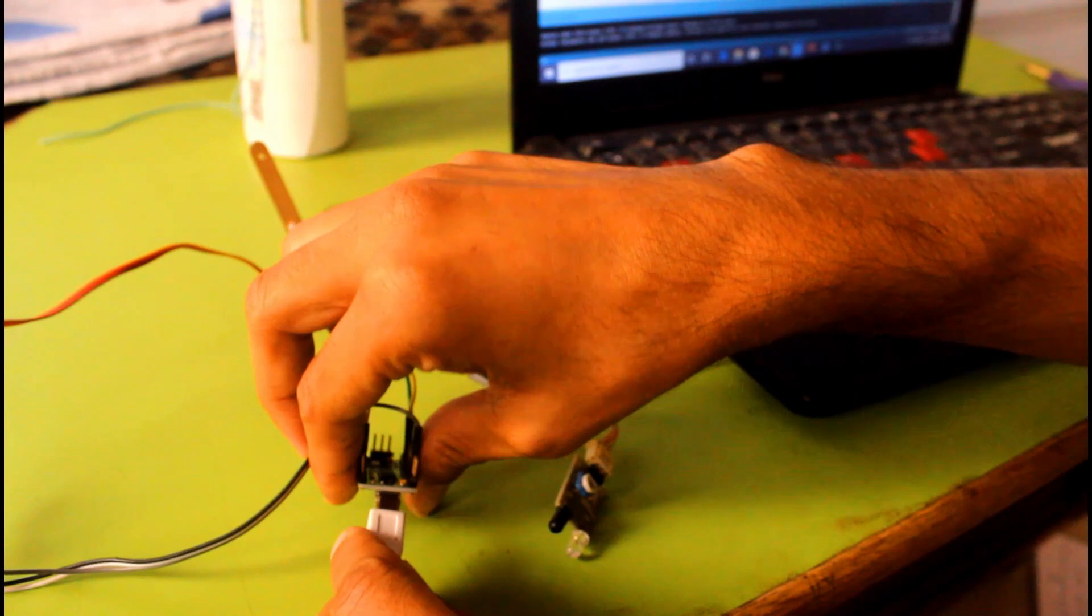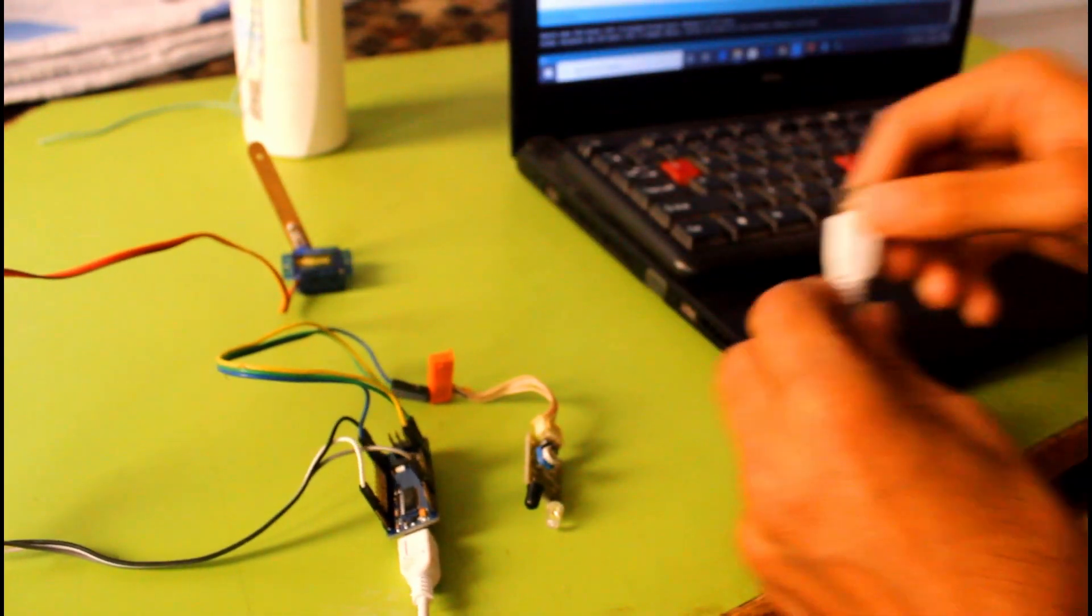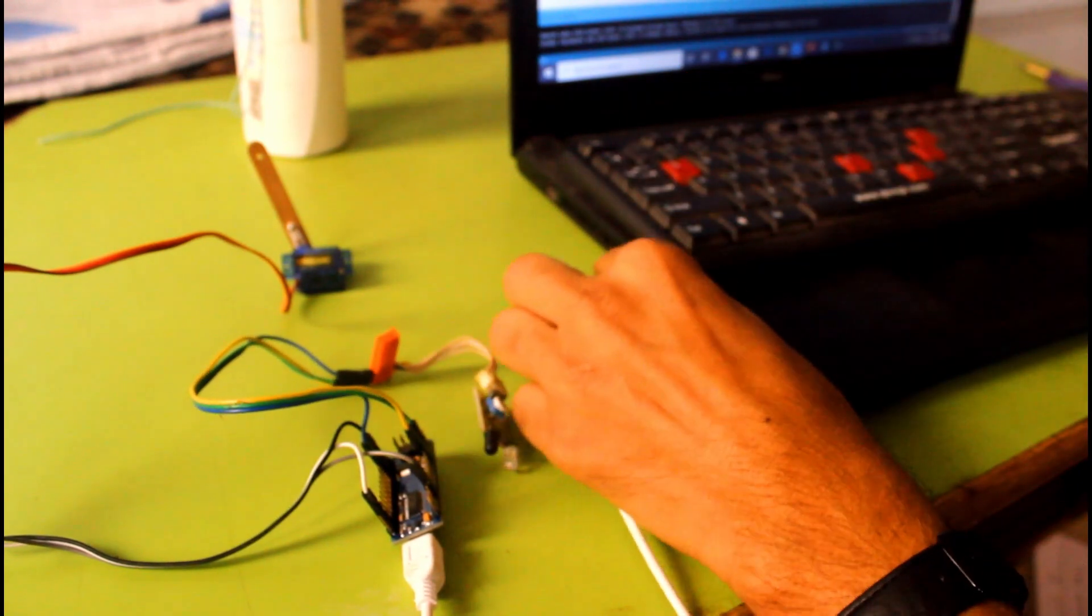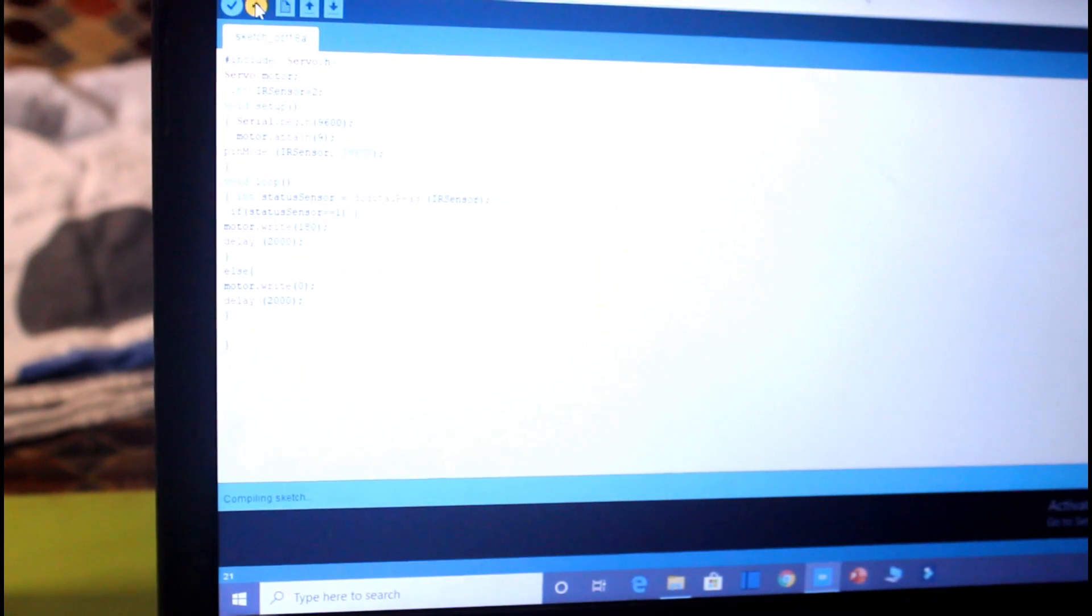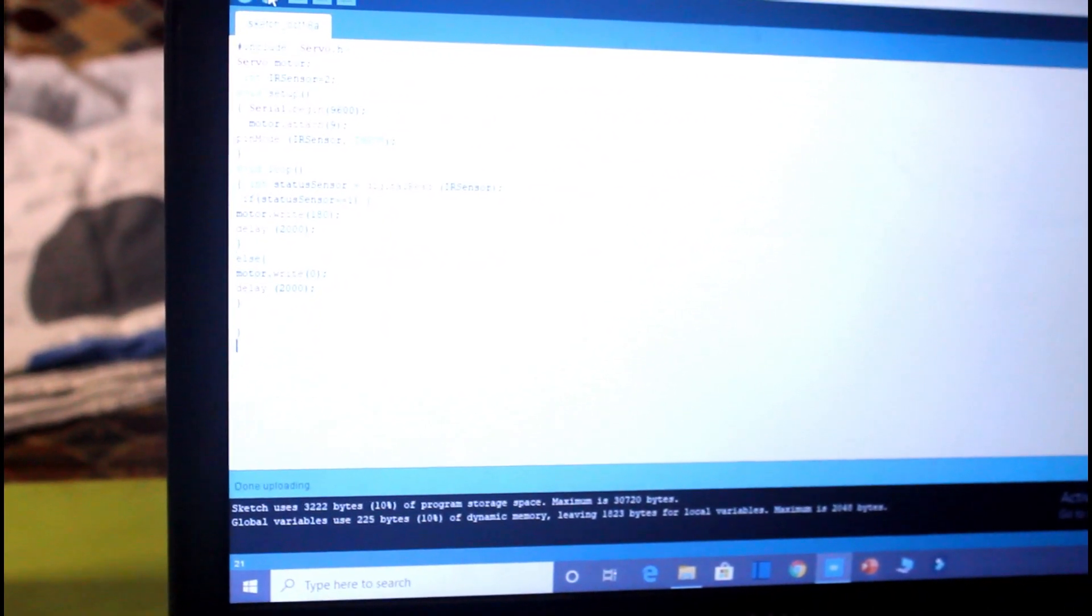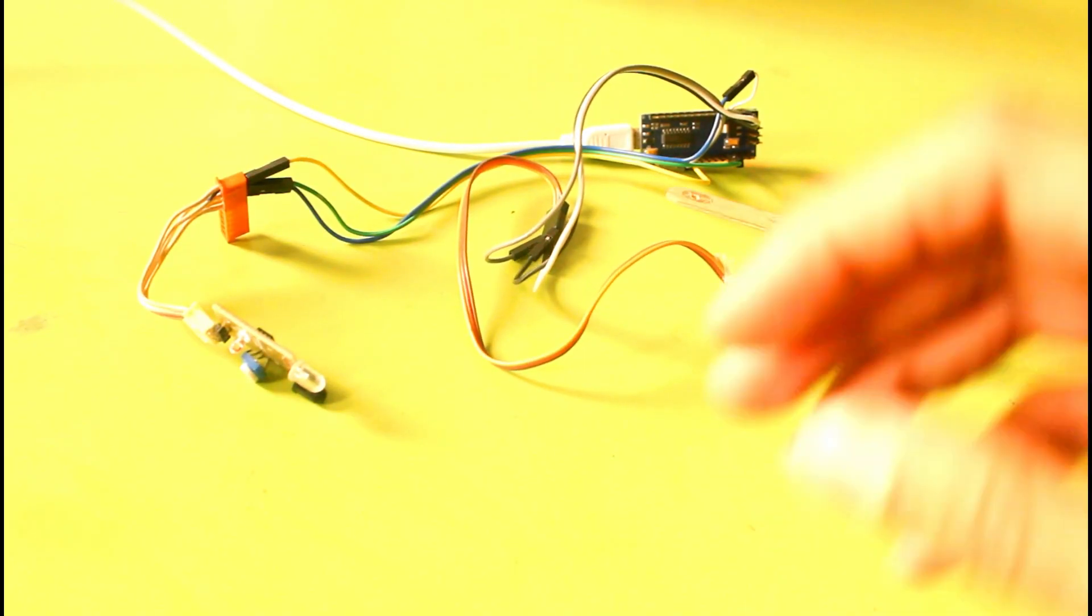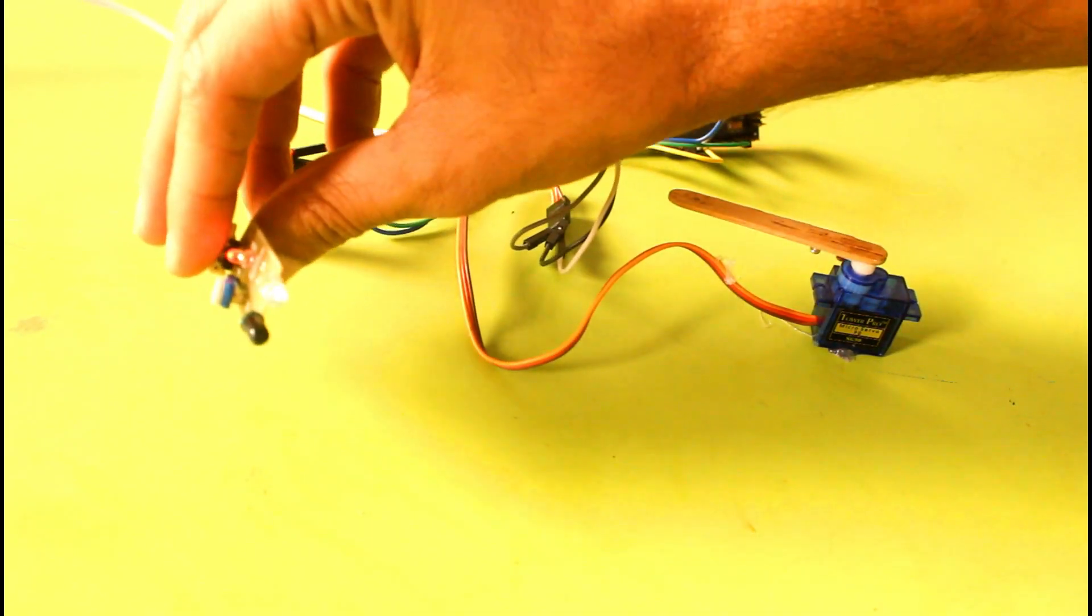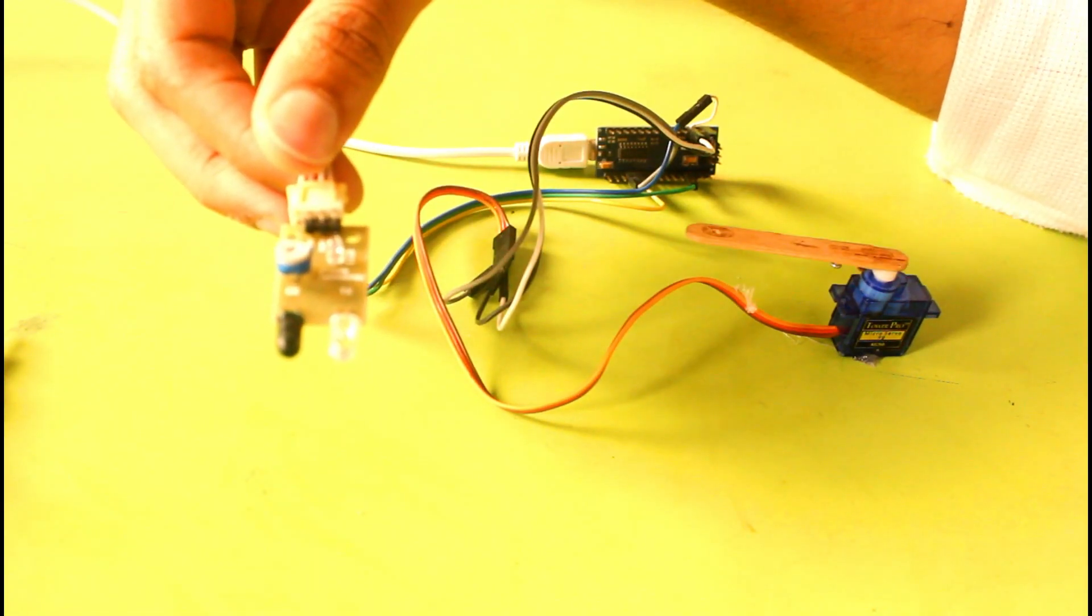Now I will upload the program into the board. The program you can get from the description. The circuit diagram is quite simple - the digital pin number 8 is for IR sensor and pin number 9 is for motor, while the other pins are for power. Let's see if it is working and we need to change the resistance so that we can set the proper distance.